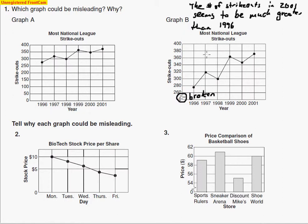And the reason is because of that broken graph right here. Because this is broken, it makes it seem as though the number of strikeouts way over here in 2001 is a lot more than 2000 and then 1996. When we look at this graph, and this point is definitely higher than this point, but not a lot higher.